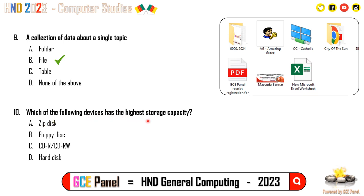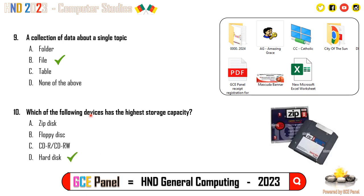Question 10: Which of the following devices has the highest storage capacity? Options include a zip disk, floppy disk, CD-write, CD-read-write, and hard disk. A zip disk is about the same size as a floppy but much thicker. CDs cannot carry as much information as a hard disk. So the key here is D — the hard disk drive.